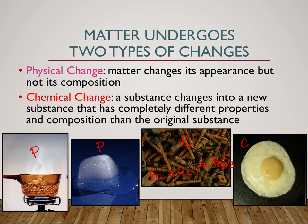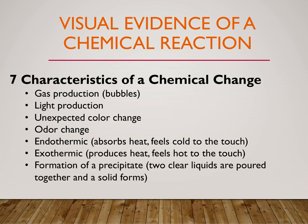Over here with the egg — the egg has been cooked. We've changed the chemical composition of the egg by heating it. You wouldn't eat a raw egg, but you would eat a cooked egg — it's totally different, it has totally different properties. You're also not going to get salmonella that way. So here are our seven characteristics of a chemical change — seven ways that you will know that a chemical change has occurred. Anytime a chemical change happens, one or more of these also happens.